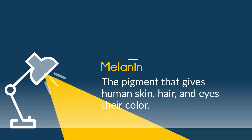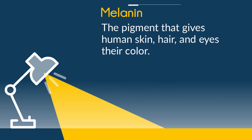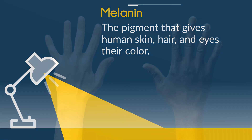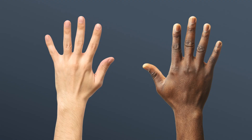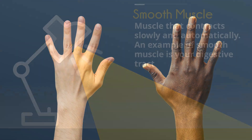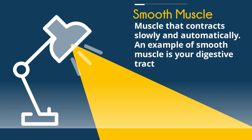Next we have melanin. It's the pigment that gives human skin, hair, and eyes their color. And here's some melanin at work. And finally, smooth muscle.